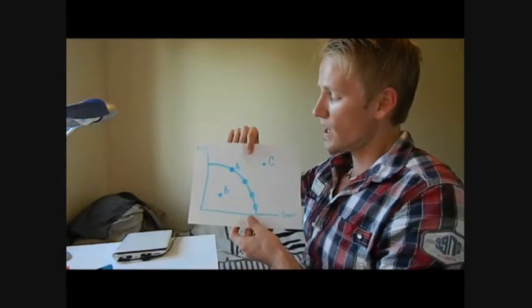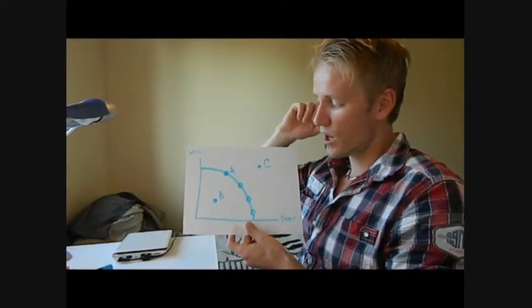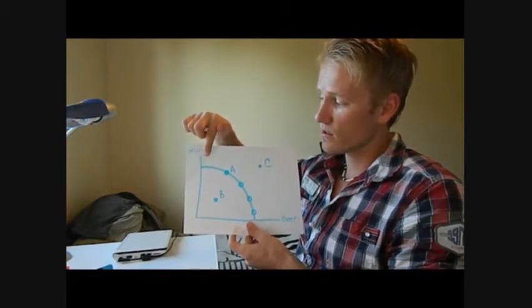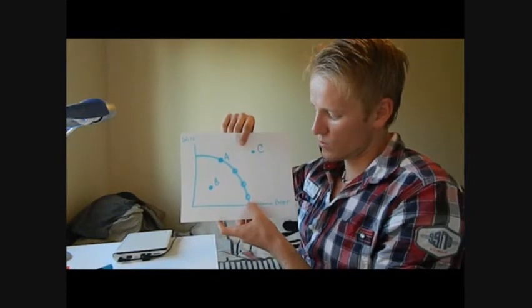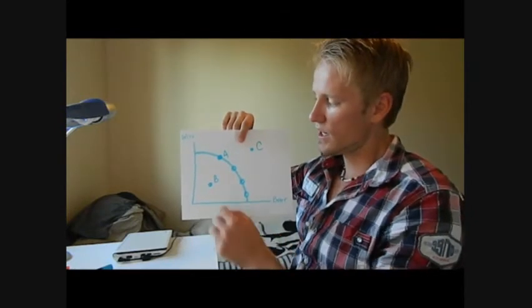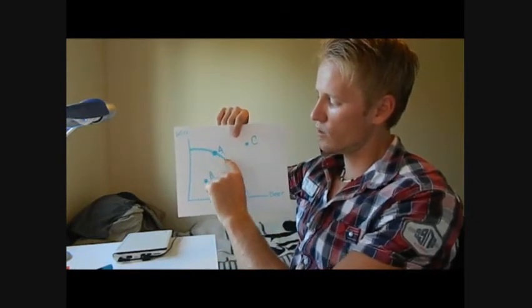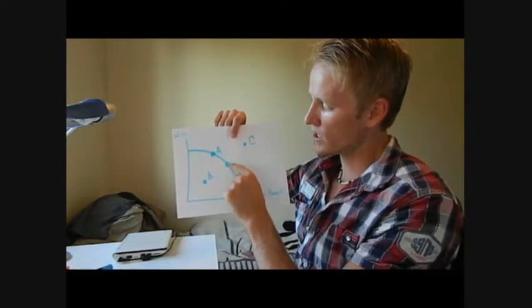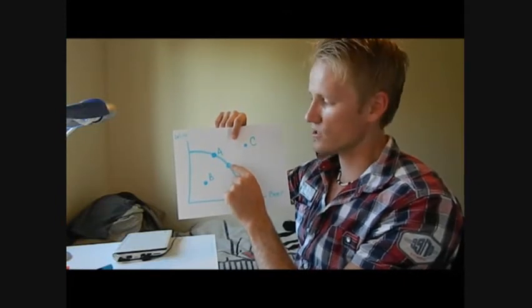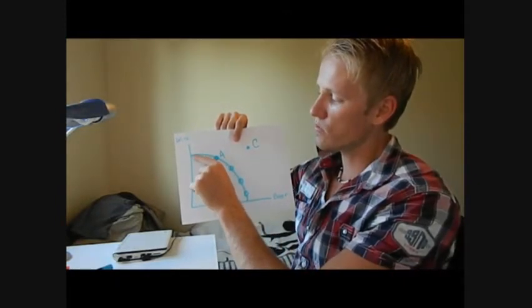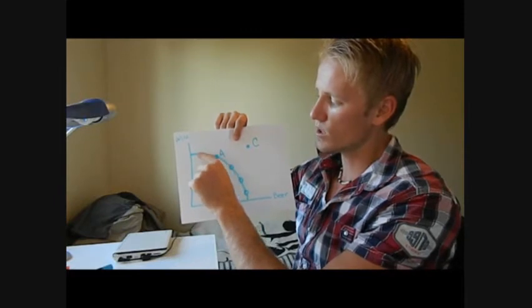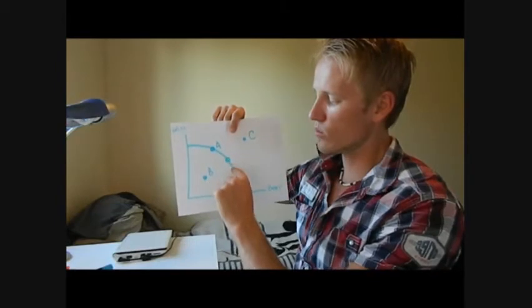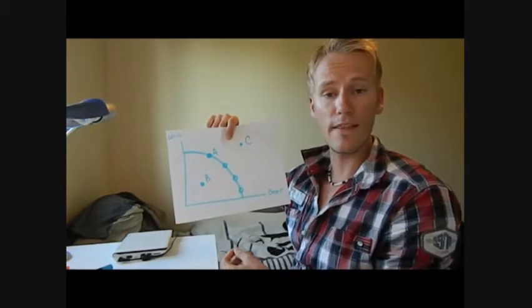The PPF also represents opportunity cost. If we're producing completely wine on one end, or completely beer on the other, as we move along the curve we see the slope changing. Going from point A to another point, the opportunity costs change — for every one bottle of wine we give up, we gain a lot of beer. As we move further along, we have to give up more and more wine to get less and less beer.